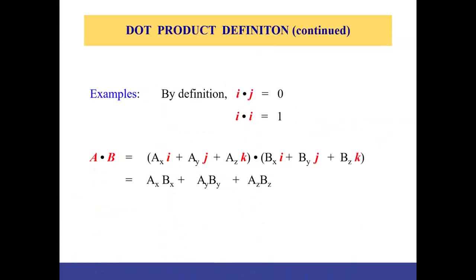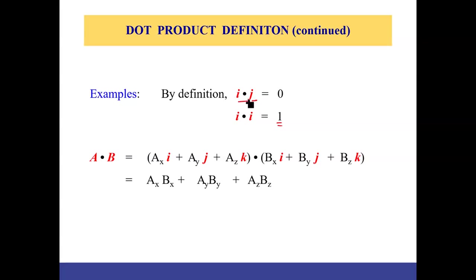The dot product of two same unit vectors is always one: i·i = 1, j·j = 1, k·k = 1. But the dot product of two perpendicular vectors is always zero: i·j = 0, j·k = 0, k·i = 0.